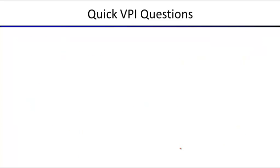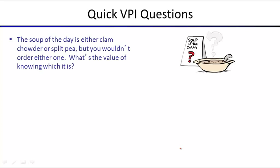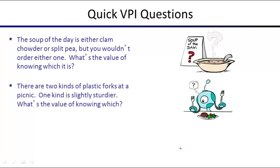A couple of quick questions. The soup of the day is either clam chowder or split pea, but you would not order either one of them — what's the value of knowing which one is the soup of the day? Zero, because your action would never be affected by it, hence your utility would also not be affected. There are two kinds of plastic forks at a picnic — one kind is slightly sturdier. What's the value of knowing which is the sturdier fork? It depends: if you eat with your hands no matter what, it's zero; but if you like eating with a fork and don't like it when it breaks, there is some value in knowing which one is sturdier.